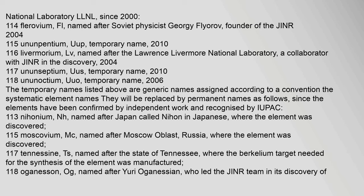Element 116, Livermorium (Lv), named after the Lawrence Livermore National Laboratory, a collaborator with JINR in the discovery, 2004. Element 117, Ununseptium (Uus), temporary name, 2010. Element 118, Ununoctium (Uuo), temporary name, 2006. The temporary names listed above are generic names assigned according to a convention — systematic element names — and will be replaced by permanent names, since the elements have been confirmed by independent work and recognized by IUPAC. Element 113 is permanently named Nihonium (Nh), named after Japan (called Nihon in Japanese), where the element was discovered.